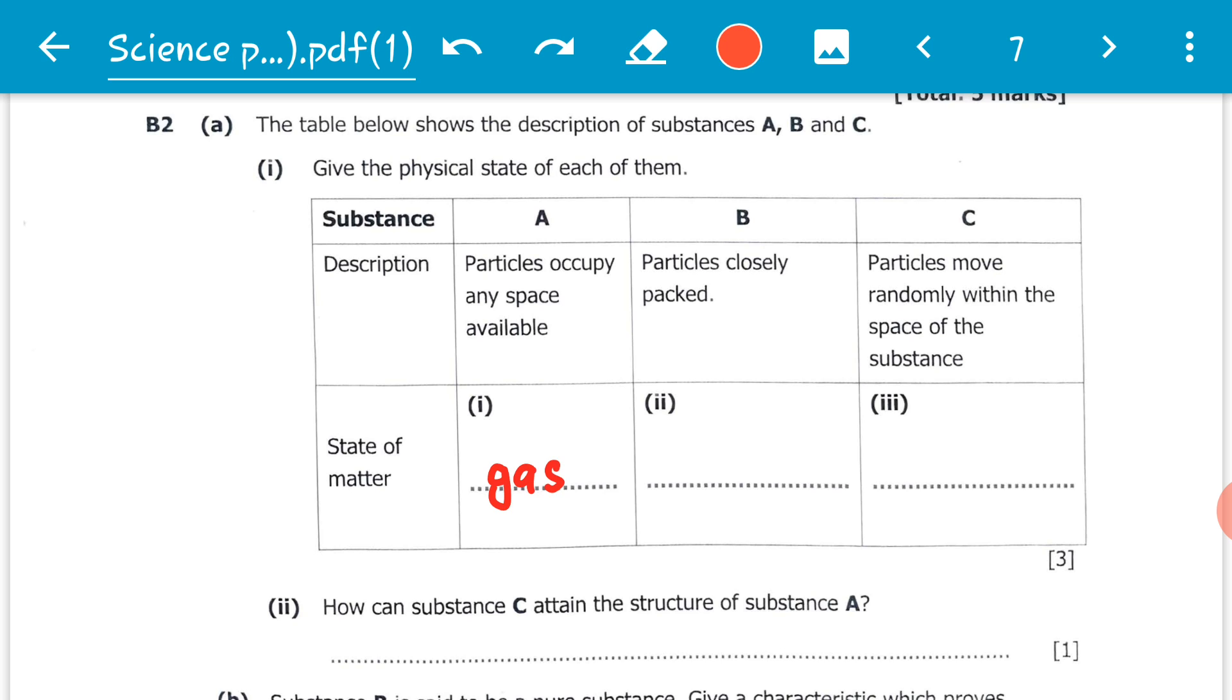B: particles are closely packed. It is only in solids where particles are held together by very strong intermolecular forces of attraction. Therefore the particles are closely packed and can't move about from one point to another. The only movement is vibrations. So substance B is a solid.